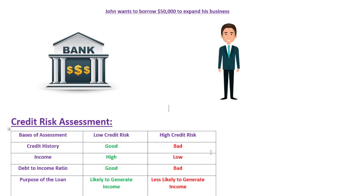If John fails to repay his loan, your bank may suffer losses that can have a significant impact on its financial health. When a borrower defaults, the lender may have to write off the loan as a loss, which badly hurts its profit. In some cases, the bank may have to sell the borrower's collateral — such as property or inventory — to recover losses. Similarly, if you are a company selling products on credit, you must check your borrower's credit history. If their history is poor and they are a high credit risk, you can either refuse credit or increase the price of goods before extending credit.